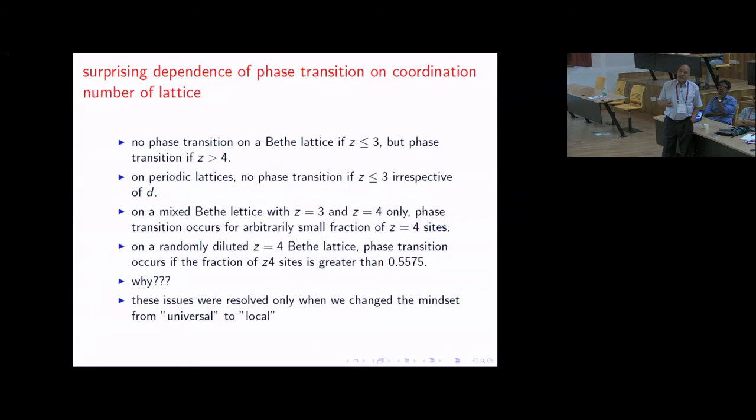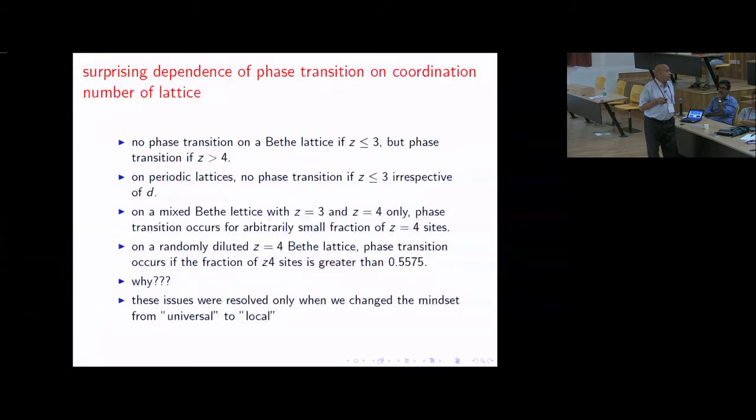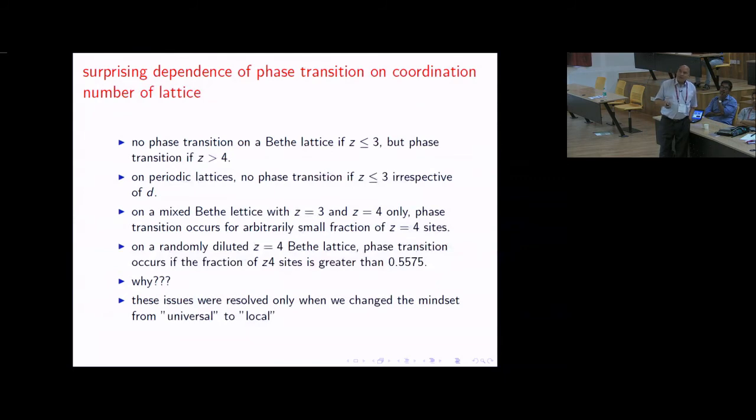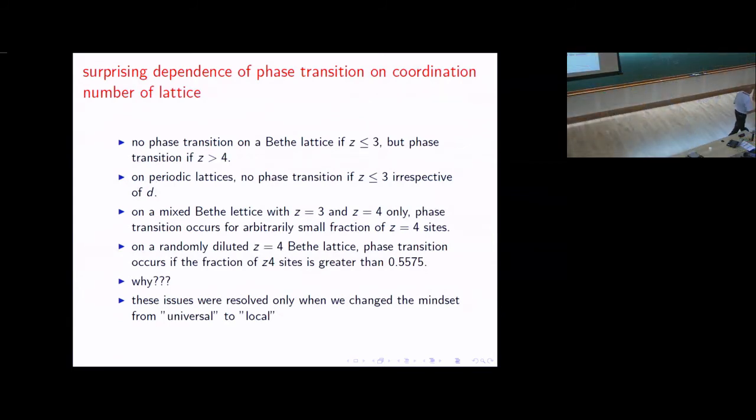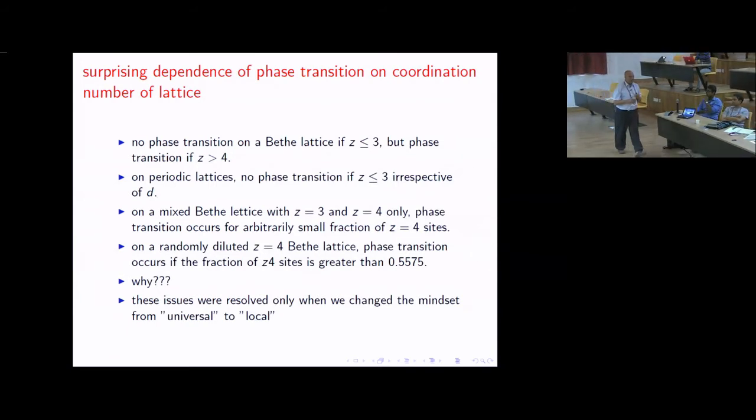Then I did another calculation on a randomly diluted z equal to four lattice. In this lattice I only have lattice sites that have coordination three or four. This is a randomly diluted z equal to four Bethe lattice, so there are sites which are isolated, which are not coordinated with anybody else. Sites with one, two, three, four neighbors. I found, these are all exact solutions, that phase transition occurs only when the fraction of z4 sites is greater than about 0.55, this is an exact number. So the question is why does this happen? All the time this problem was difficult and I didn't understand it because I was thinking in terms of global things. I was used to thinking critical exponents depend only on n or dimension d. So here also I was thinking that z has to be same throughout the lattice.